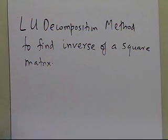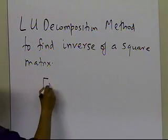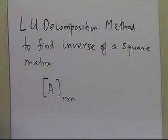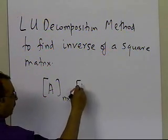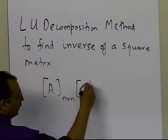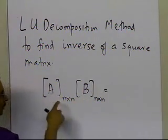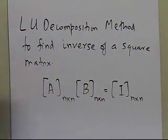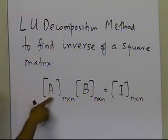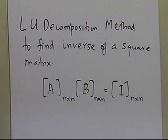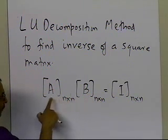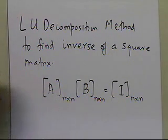If you are trying to find the inverse of a square n-by-n matrix, what you are basically looking for is some matrix B, which when you multiply it to the A matrix, you get the identity matrix. That is what you are looking for when trying to solve for the inverse of a matrix — some matrix B multiplied to A that gives you the identity matrix.